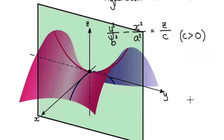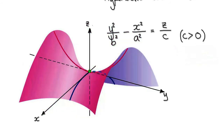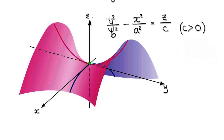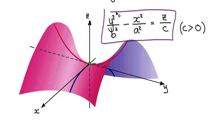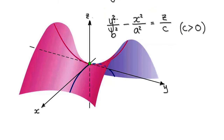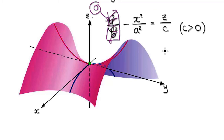Let's start from the very beginning again. Bear with me. We've been given this equation here. Now let's put 0 into the y. This term disappears, giving you minus x squared equals z — let's imagine the constants to be 1.